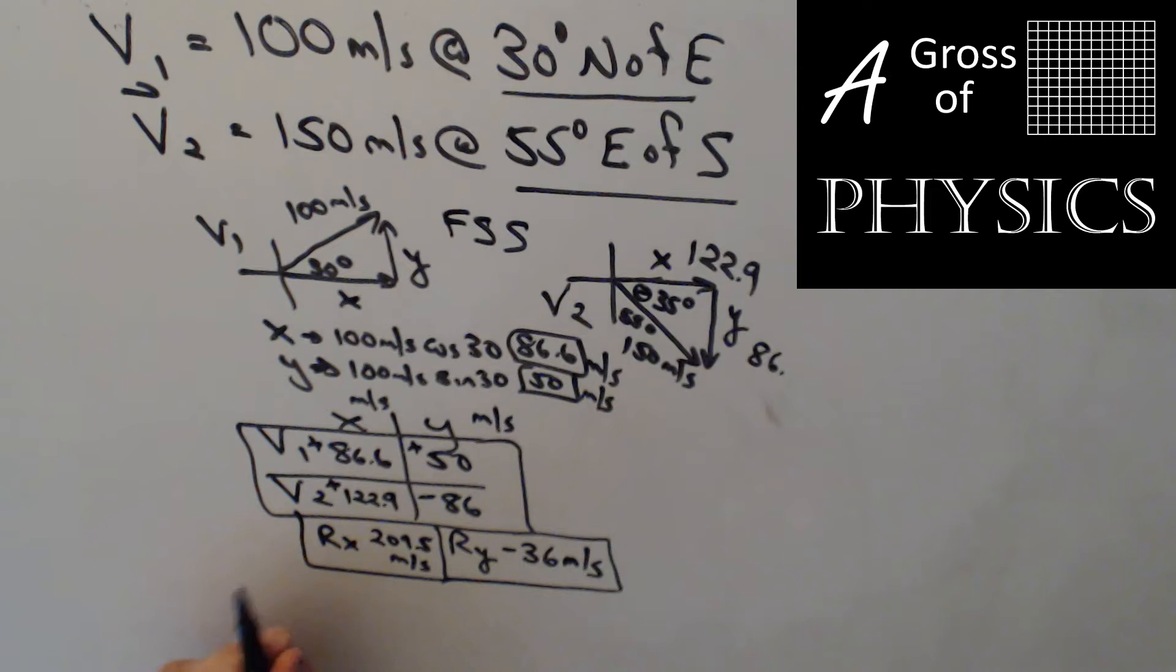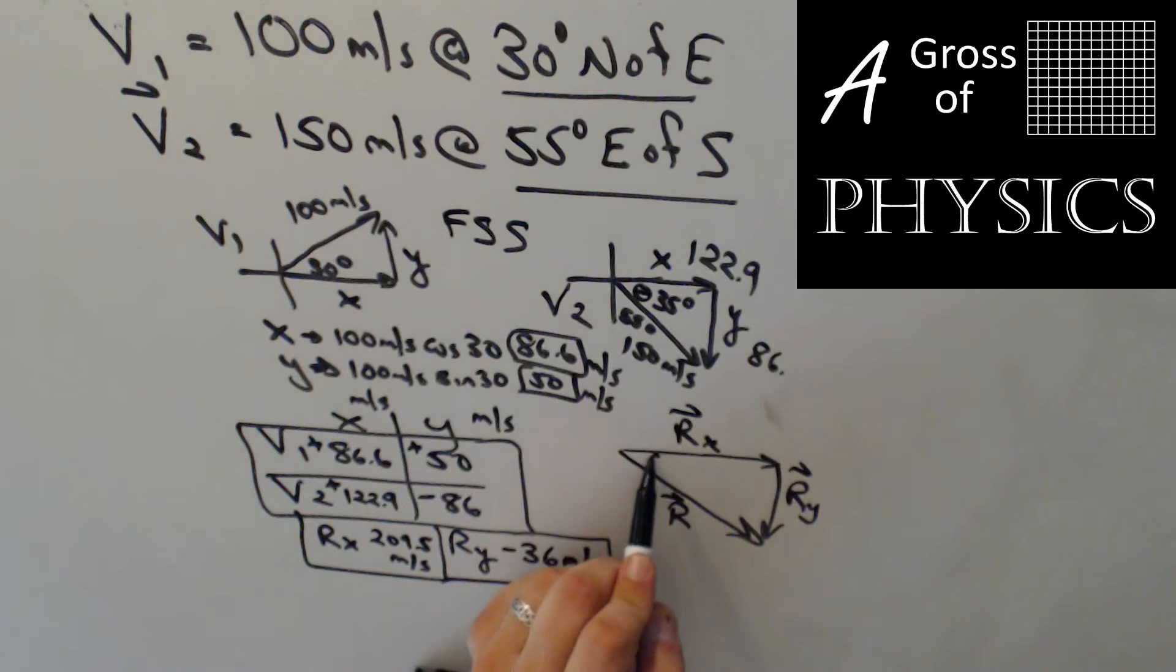So what we're going to do is sketch rx and ry. So rx goes to the right, ry goes down. And we don't have to worry about the signs now because the direction of the arrows represent the signs. Now this is a terrible sketch. I mean, this line's curved. I just drew it freehand. However, because we're doing it the mathematical method, we don't have to worry about being precise with our drawing. We're using trig. So now we would do rx squared plus ry squared equals r squared. So Pythagorean theorem, 209.5 squared plus 36 squared equals 45,000 and change. Take the square root, and I'm left with 212.6. So r is 212.6 meters per second.